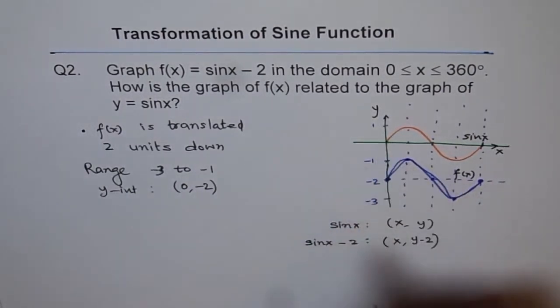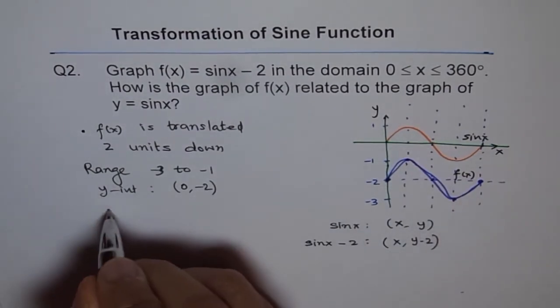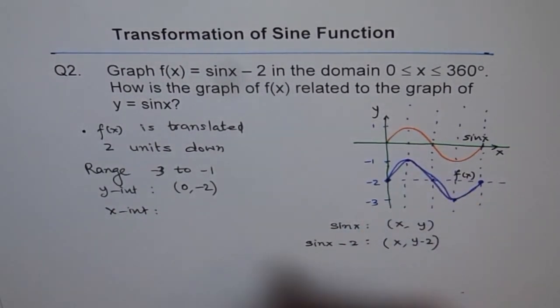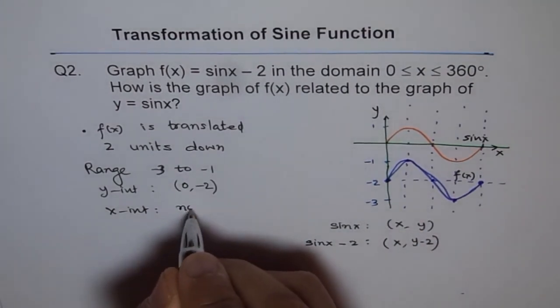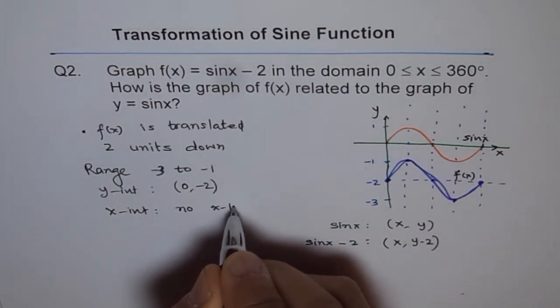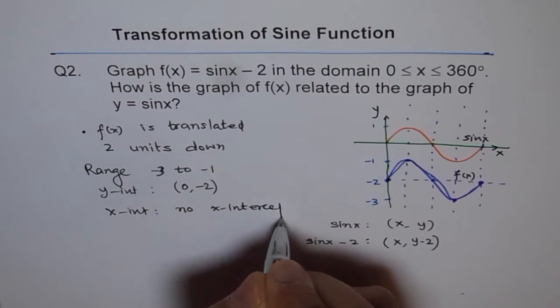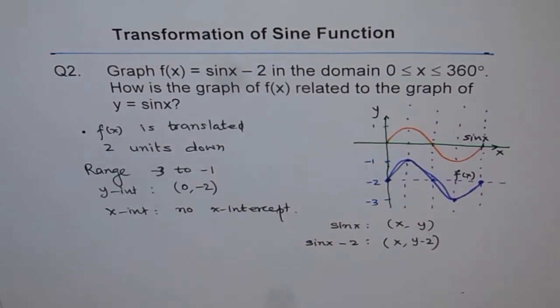Earlier, it was at (0, 0). And how about the x-intercepts? So we don't have any x-intercepts, do you see? So we have no x-intercept. So these are the changes which we see when f(x) is translated two units down. Thank you.